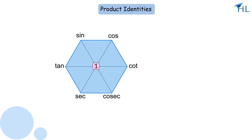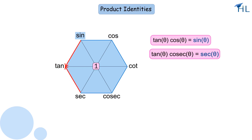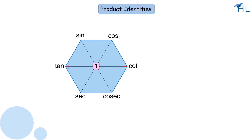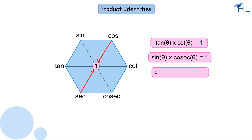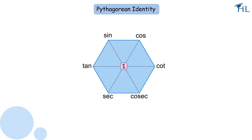Cosec θ = 1 / sin θ, sec θ = 1 / cos θ, tan θ = 1 / cot θ. The hexagon also shows that a function between any two functions is equal to them multiplied together. For example, tan θ × cos θ = sin θ. Similarly, tan θ × cosec θ = sec θ, and sin θ × sec θ = tan θ. Now observe that tan and cot are opposite to each other and one is between them, so tan θ × cot θ = 1. Similarly, sin θ × cosec θ = 1.